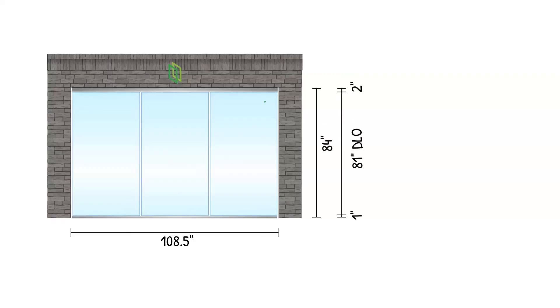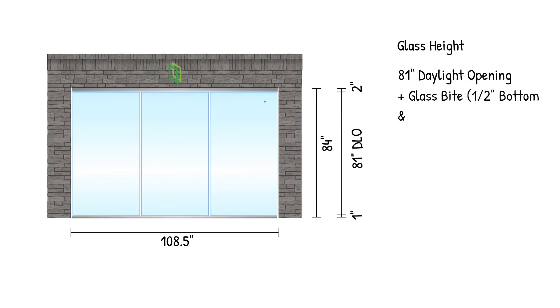Here's a little side note: in the glazing field, we always measure the width and then the height. So if I were to say four by five, I mean four wide and then five tall. Okay, we had 81 inches. Now we just have to add back the glass bite. If we had a half inch for the bottom and a half inch for the top, that brings our glass total to 82 inches tall.